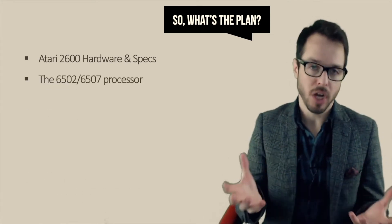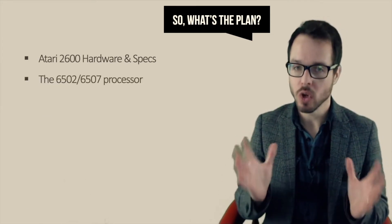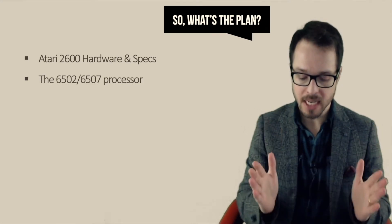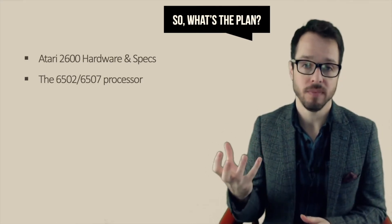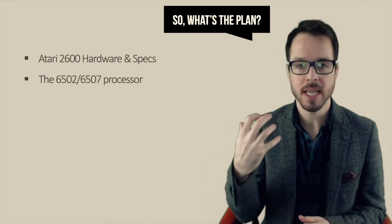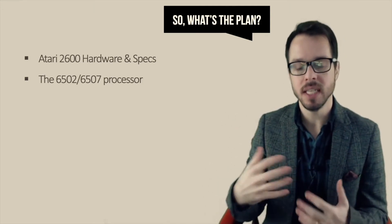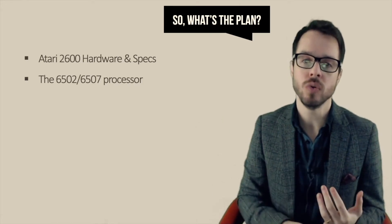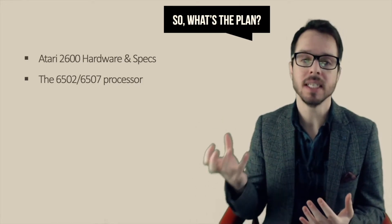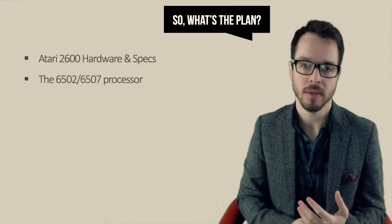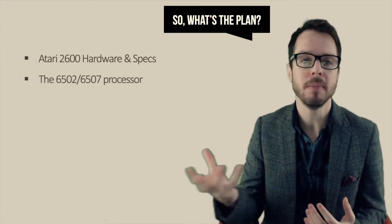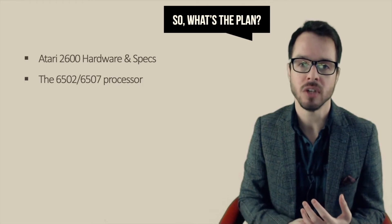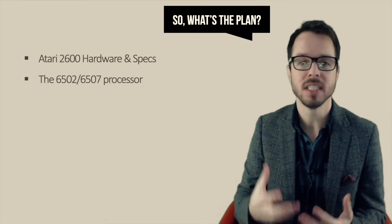And also talking about hardware and all these elements, we are going to pay close attention to one very important element — our processor. We're going to zoom in and dedicate a couple of lectures to understanding the details of the 6502, or in the case of the Atari, the 6507 processor. We're going to learn why this processor was so popular, why so many machines used the 6502, and why so many programmers still love to code for it.